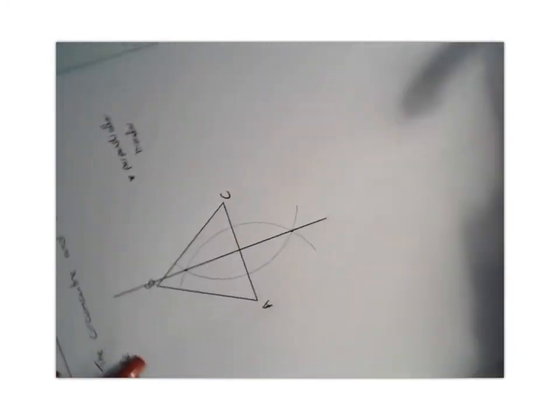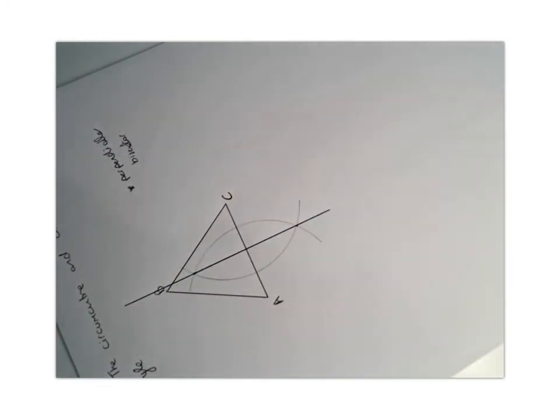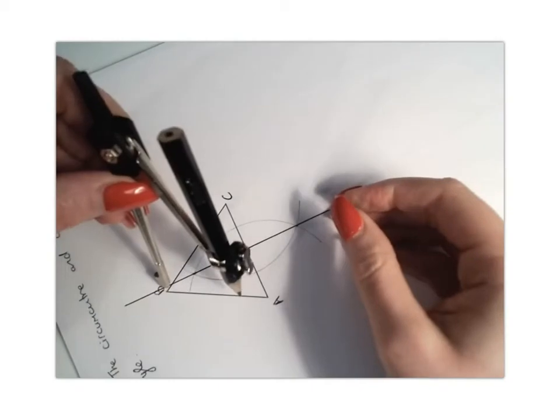You're then going to turn your triangle around and find another perpendicular bisector. This time I'm going to do it for the line AB. Again, I'm going to make sure my compass is stretched more than halfway.